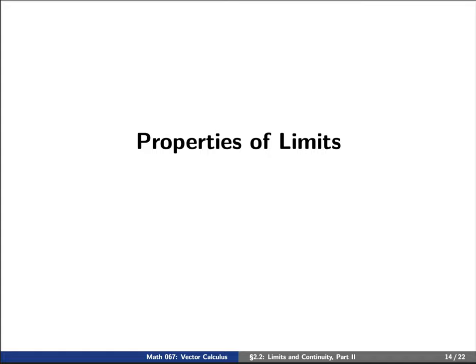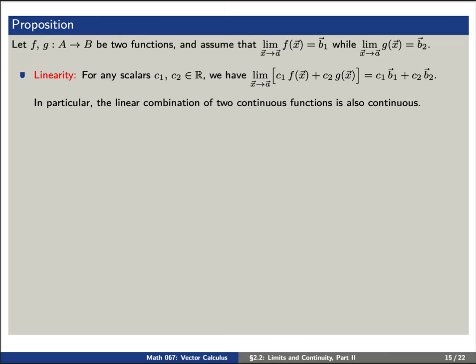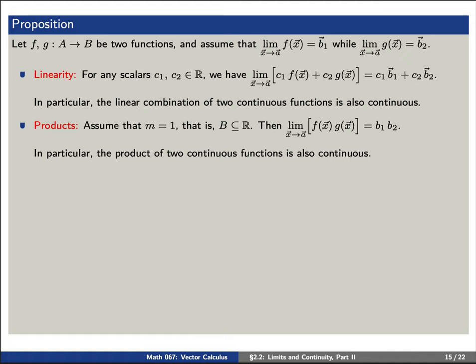Let's use this now to finish the lecture by discussing some properties of limits. Say that f and g are two functions with the limit as x approaches a of f(x) equal to b₁ and the limit as x approaches a of g equal to b₂. First, we have the property of linearity: the linear combination of two continuous functions is also continuous. In other words, the limit as x approaches a of c₁f plus c₂g is c₁b₁ plus c₂b₂. We have a similar property about products: the limit as x approaches a of f times g is simply b₁ times b₂.